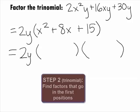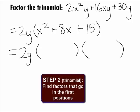In Step 2 of factoring that trinomial that was in the parentheses, we want to find the factors that go in the first positions. When you multiply the first positions out, you get the first term of the trinomial, which in this case is x squared. So, the first terms of the factors will each be x.